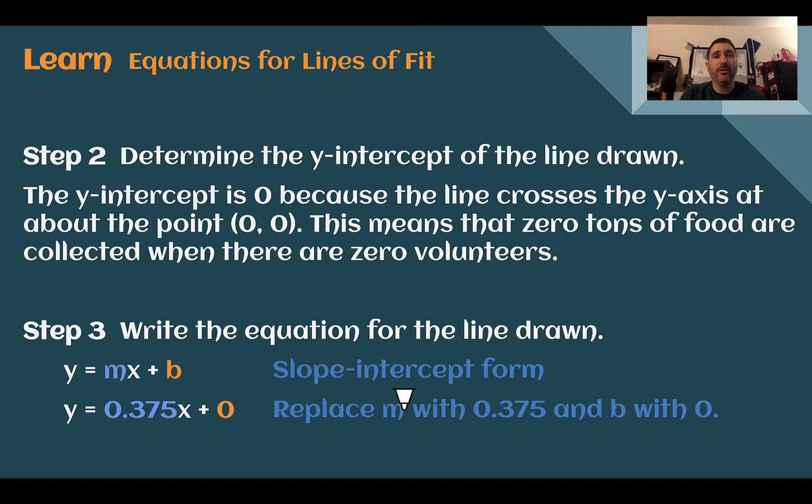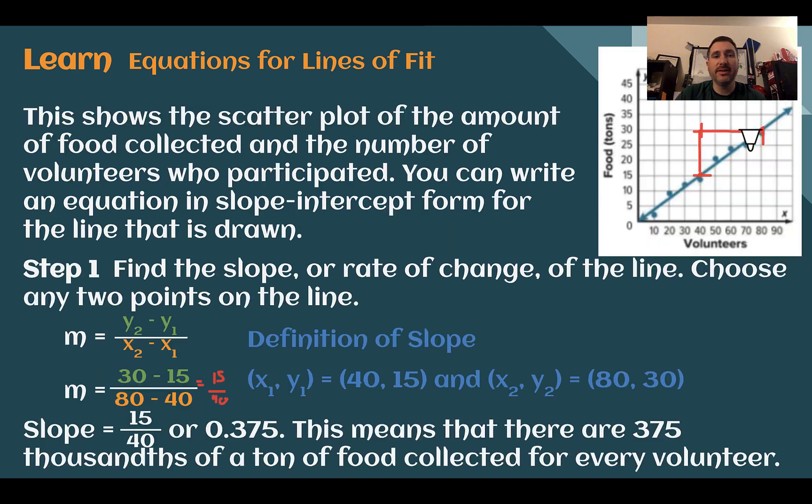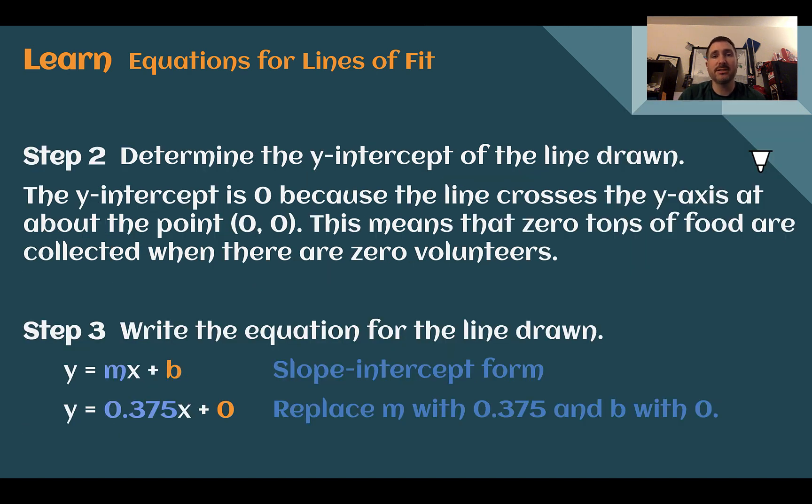Next, we need to figure out the y-intercept. So we can look at our graph. Sometimes we're going to have to estimate where it is. But in this case, it does go through 0, 0. This makes sense because if there are 0 volunteers, then 0 tons of food should be collected. So the line should go through 0, 0.